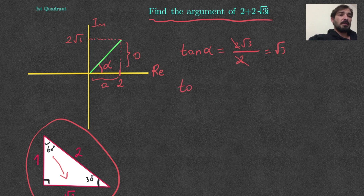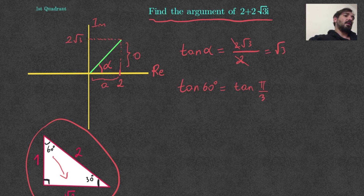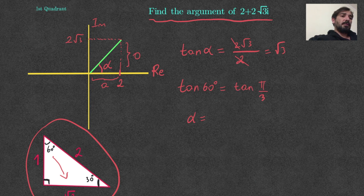So tangent 60° — or tangent π/3, since π is 180 and 180 divided by 3 is 60° — gives us √3. Therefore alpha, which is the same as theta here, equals π/3. So the argument of 2 + 2√3·i is π/3.